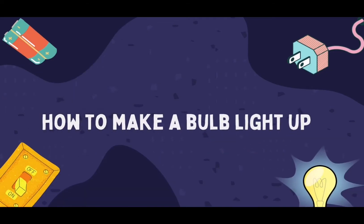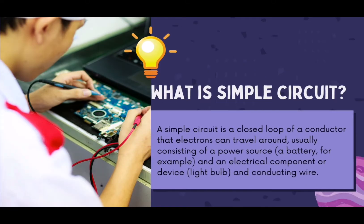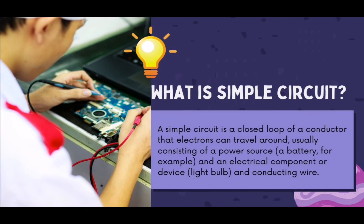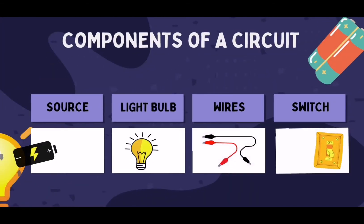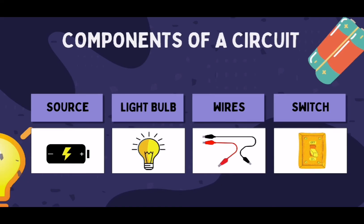To further understand the flow of electricity to your appliances, alamin natin kung paano makapagpapailaw ng isang bumbilya through a simple circuit. A simple circuit is a closed loop of a conductor that electrons can travel around. Ito ay kadalasang binubuo ng power source, an electrical component or device, and conducting wire. Ang simple circuit ay binubuo ng: the source of electricity like a battery, an electrical device or light bulb, conducting wires, and a switch.